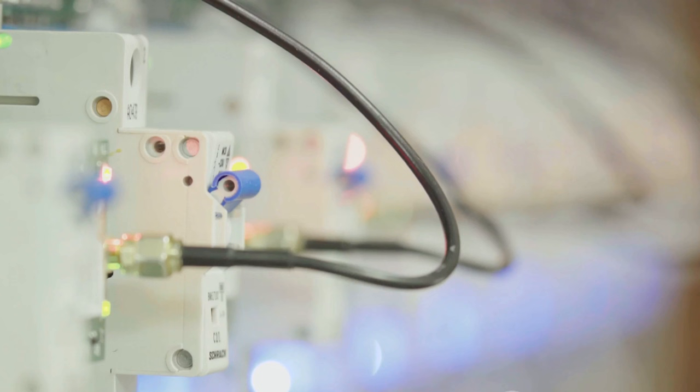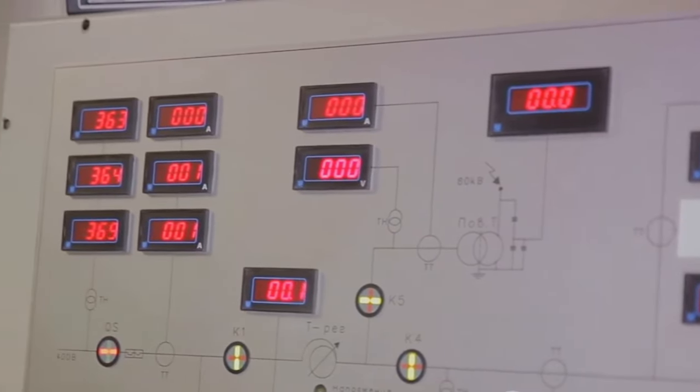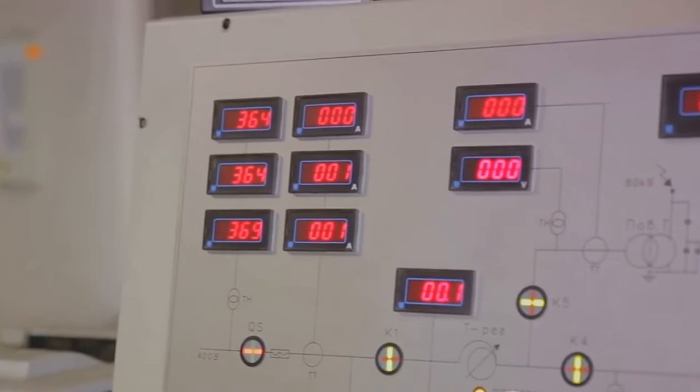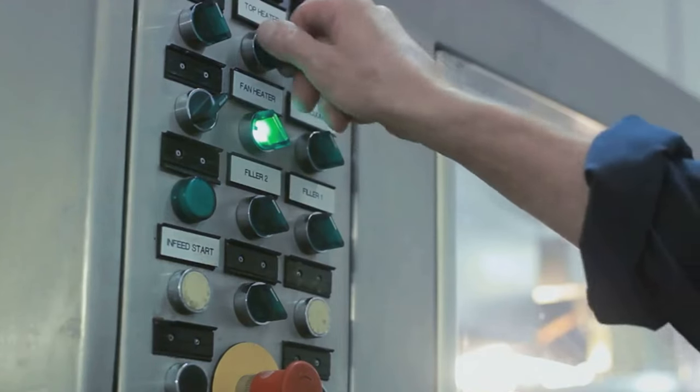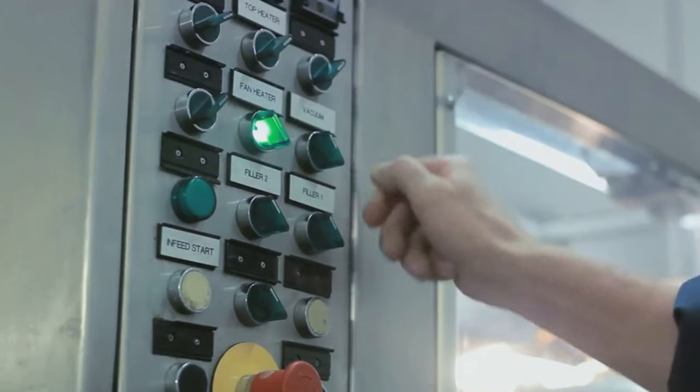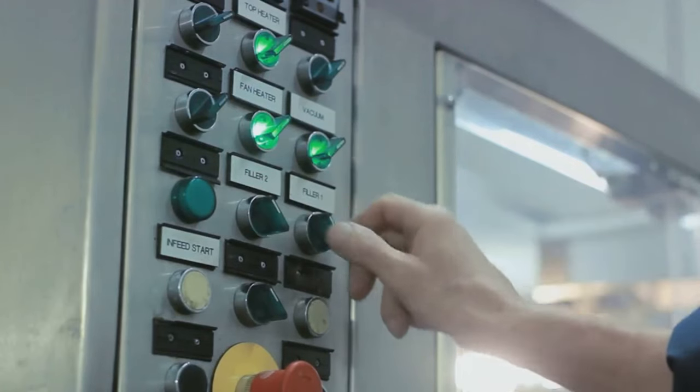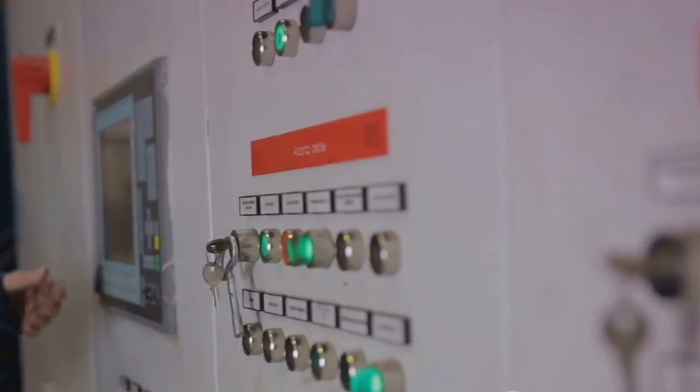So to sum it up: Miniature Circuit Breakers, or MCBs, are compact, quick-responding devices ideal for residential and commercial settings with moderate load requirements. On the flip side, Molded Case Circuit Breakers, or MCCBs, are larger, robust devices designed for heavy-duty industrial applications with adjustable trip settings for customization.